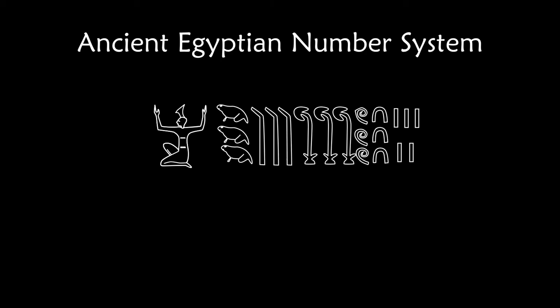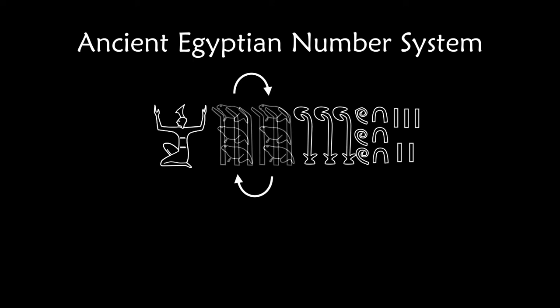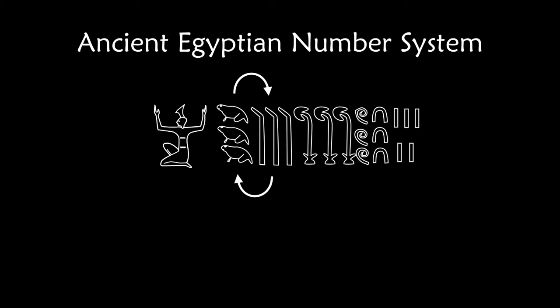One of the interesting things about the Egyptian number system, if you're a teacher, is that if your student mixes up that tadpoles are worth 100,000 and should go to the left of the bent finger, which is worth 10,000, but they mix that up — you still know what their number is. So you can correct them. The Egyptian number system is commutative. It doesn't matter the order of the numbers.